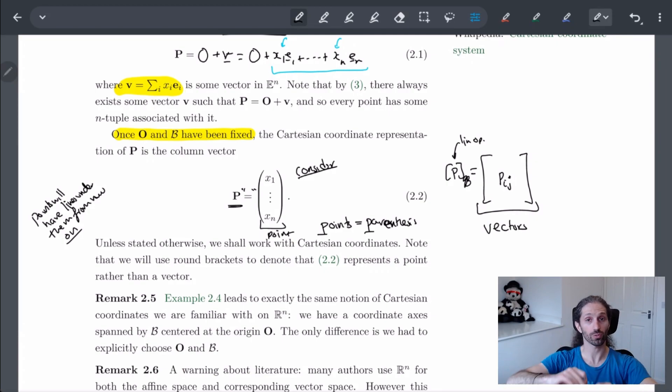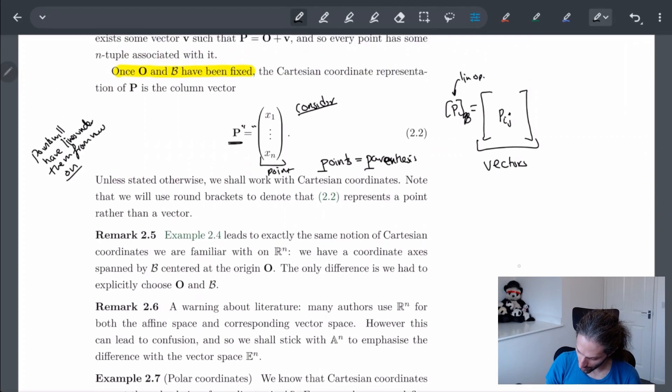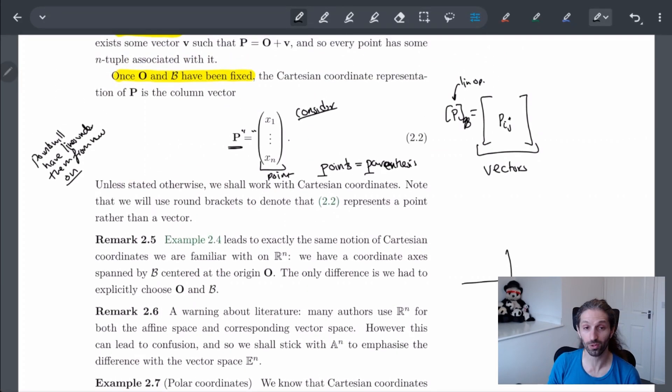So we start off with some point (0,0,0...) and then every kind of point in space is given through this lens of this point, right? So this is what we're used to seeing.